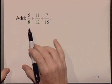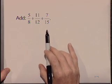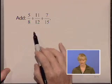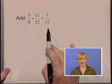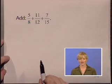Add the fractions 5 eighths plus 11 twelfths plus 7 fifteenths. Looking at our problem, we realize we do not have denominators that match, so we're going to have to find a least common denominator.